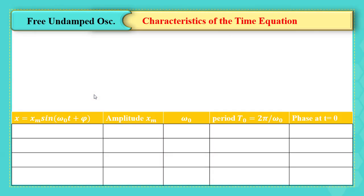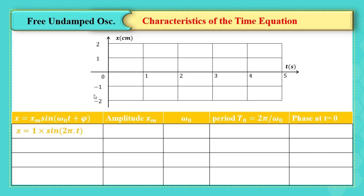We should understand how these factors affect the motion. Suppose we have a time equation x = 1·sin(2πt). The amplitude is 1 cm, ω₀ is 2π rad/s, and the period T₀ = 2π/ω₀ = 1 second. The phase is 0. The graph is sinusoidal with constant amplitude 1, starts from 0 since phase is 0 at t = 0, and has a period of 1 second.